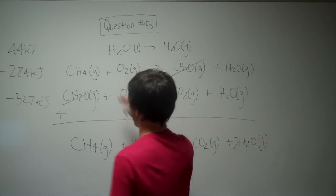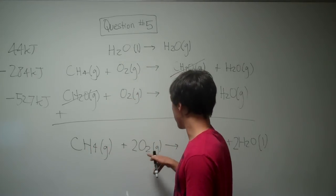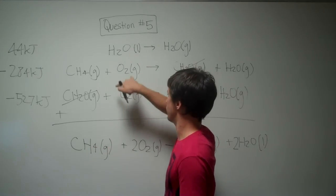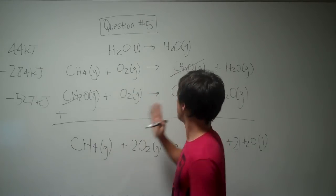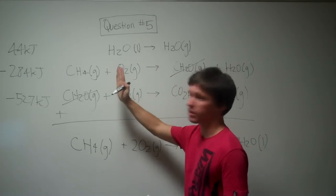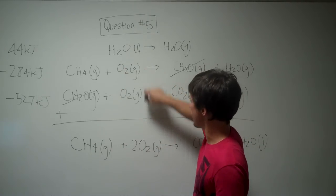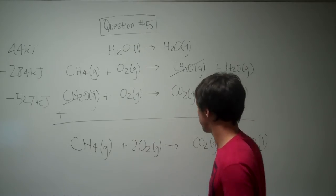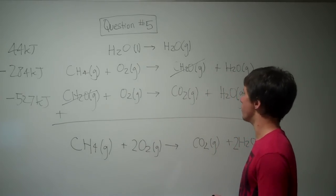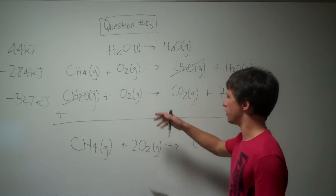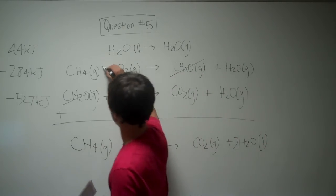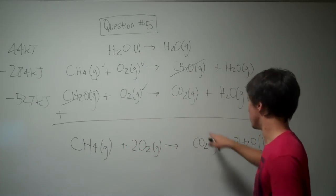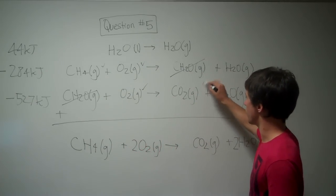So, what else do we need to do? We have a methane on this side, and we need two oxygens. We also have that. We have one oxygen here and one oxygen here. They don't cancel out because they're on the same side of the arrows. And for that same reason, they add up here. So, these things are good. We need one carbon dioxide here. We already have it.